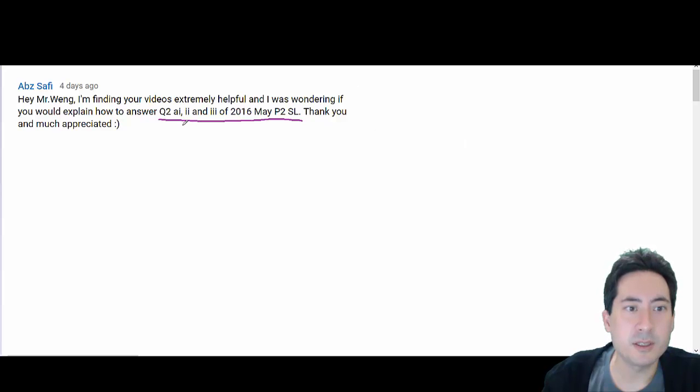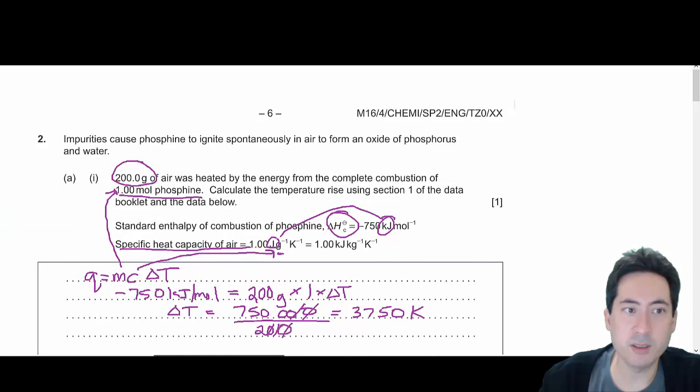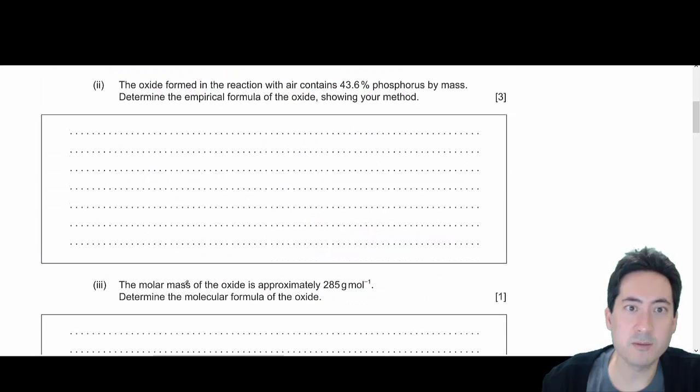Okay, so this video here is just a continuation of this question by Safi. That's doing two and three, and so I've just done the first one here, and the second one is the phosphorus. So there's some sort of phosphorus that's been burnt in oxygen, and what's the empirical formula?